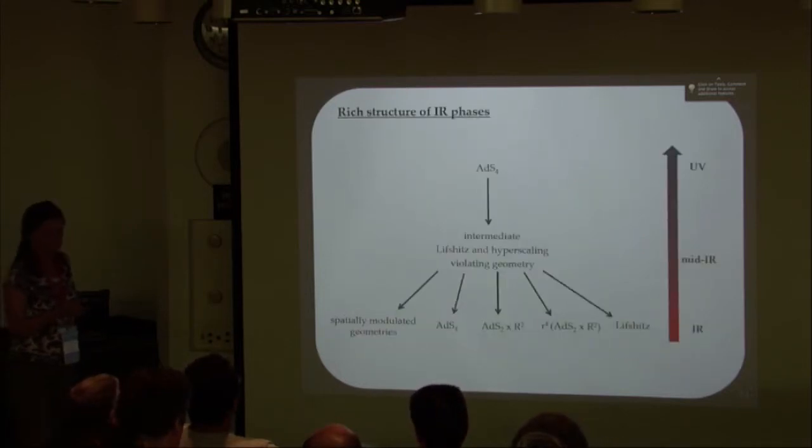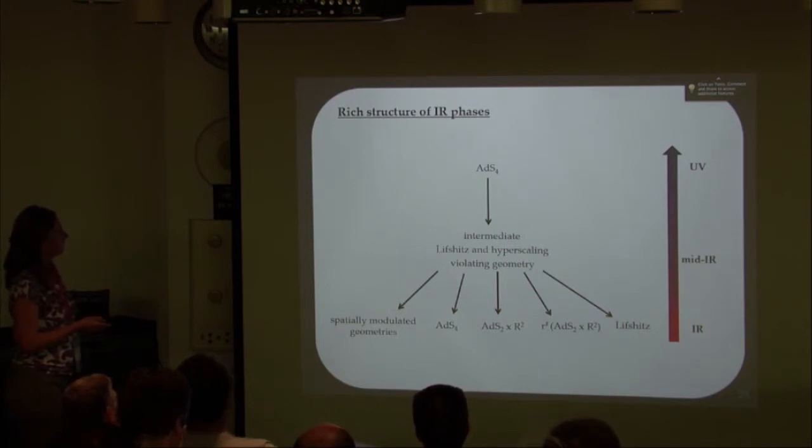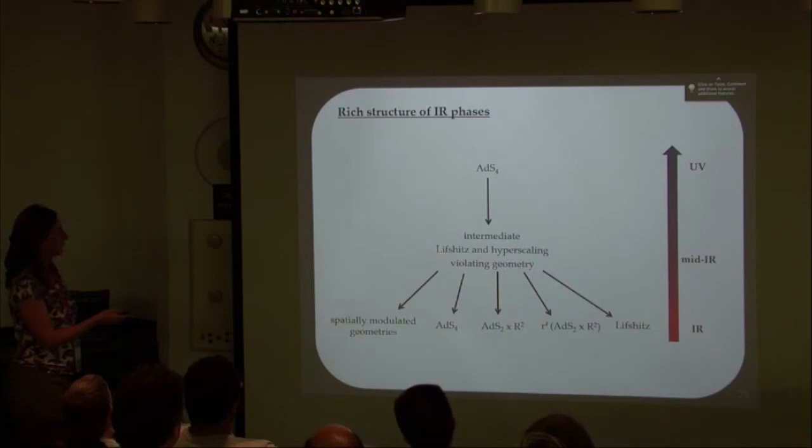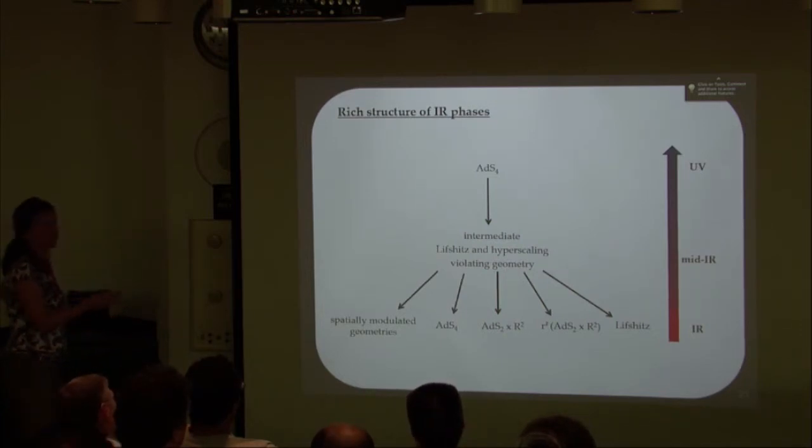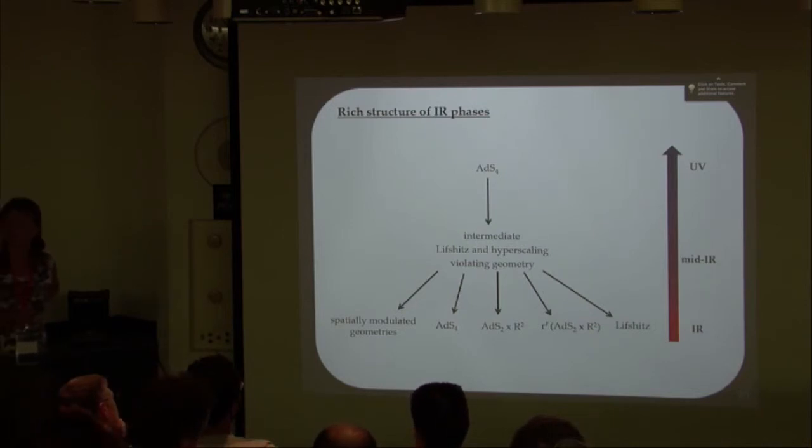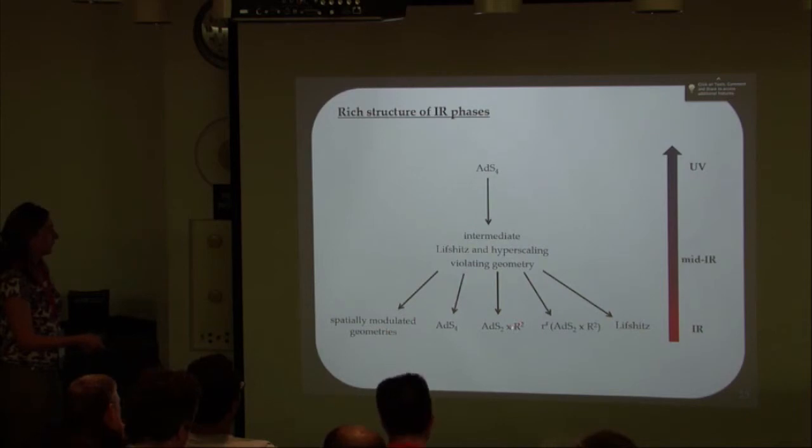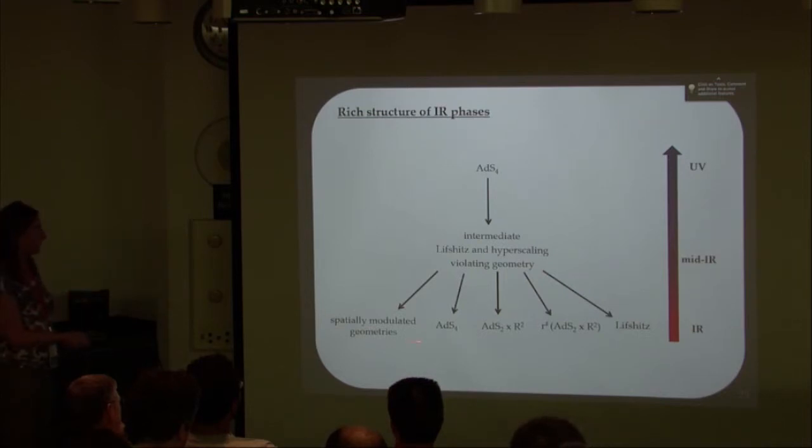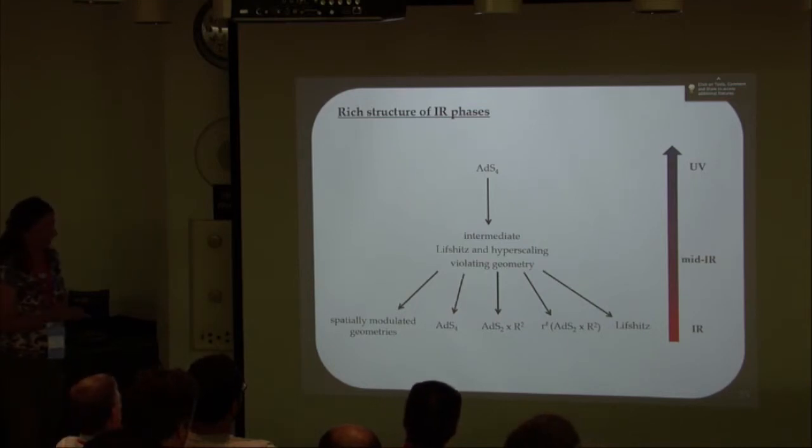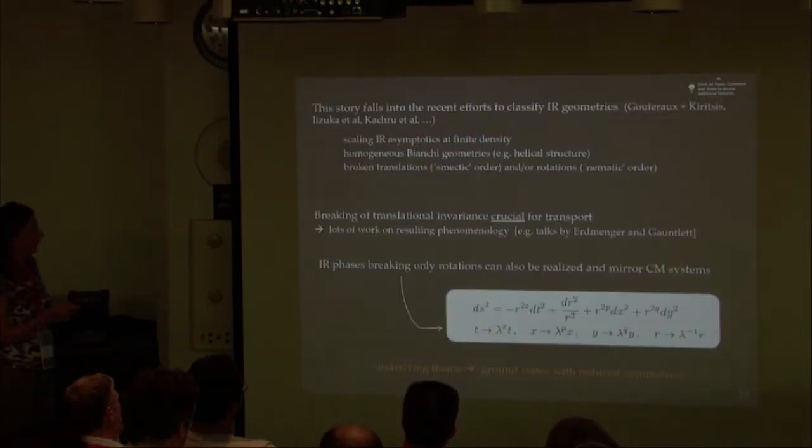Before I switch to the end of my talk, let me mention what I hope I convinced you is that there is a very rich structure in the IR behaviors for this type of solutions. I just talked about the fact that you could recover AdS4. AdS2 times the plane was certainly the first IR completion discussed. There may be spatially modulated phases. It turns out these geometries can also flow to something that is conformal to AdS2 times the plane. That is nice because if you're conformal to that, you don't have finite entropy at zero temperature. You can also flow to Lifshitz spacetimes. There's a very rich structure of possible behaviors, which was something people expected when they first started thinking about these solutions.